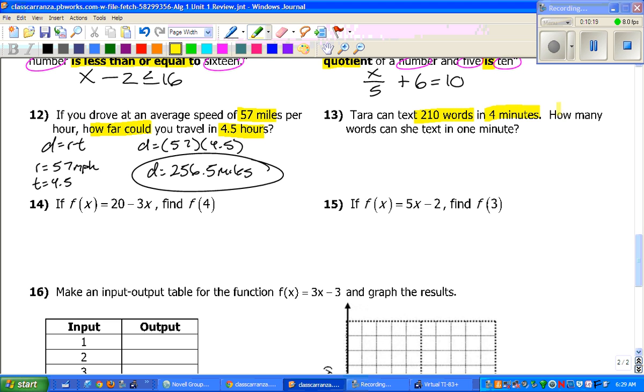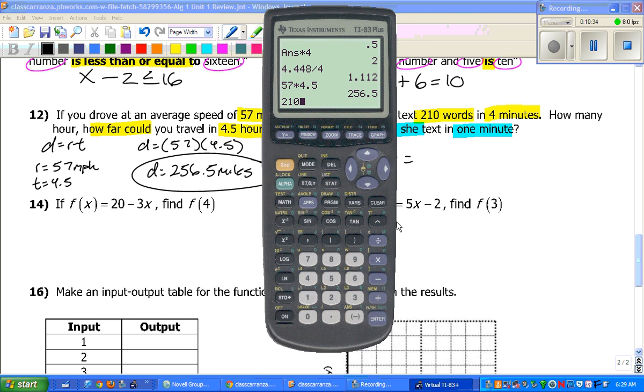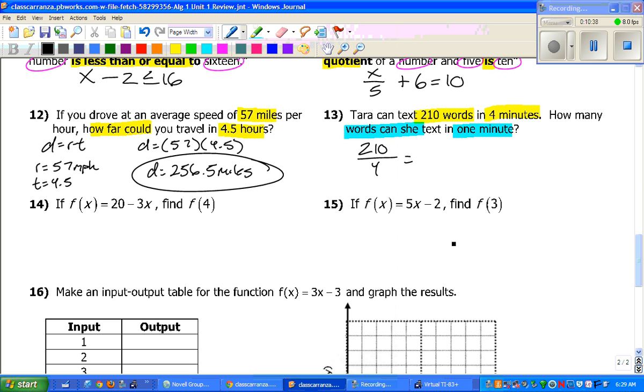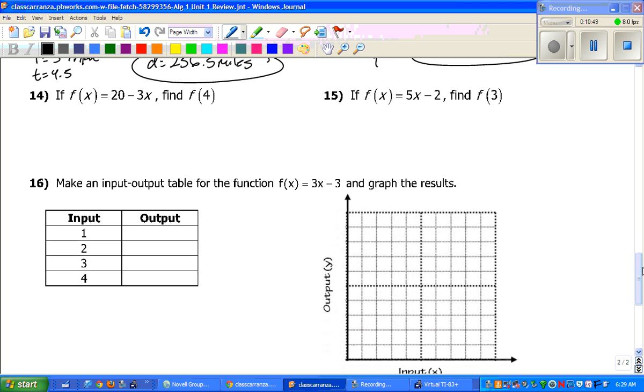Tara can text 210 words in 4 minutes. How many words can she text in 1 minute? So, we are finding the unit rate. Define the unit rate. Divide those guys up. 210 divided by 4 gives you 52.5 words. It did not say to round in any of those, so we keep those answers.